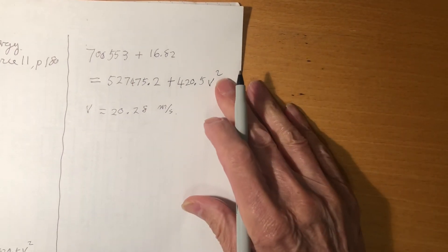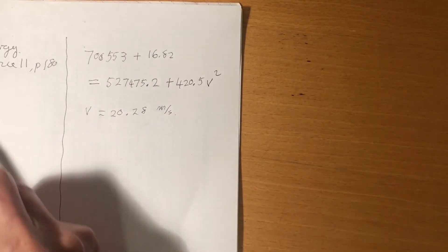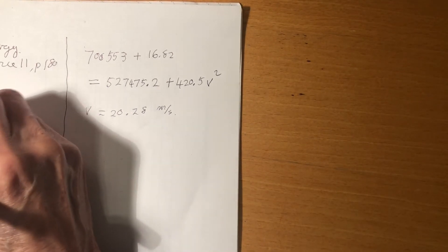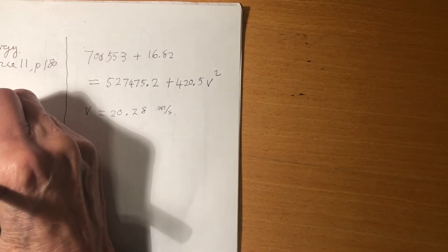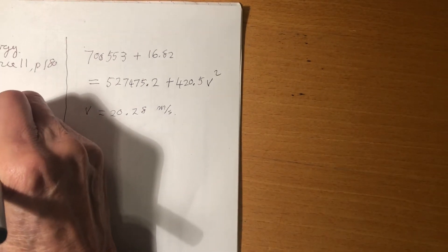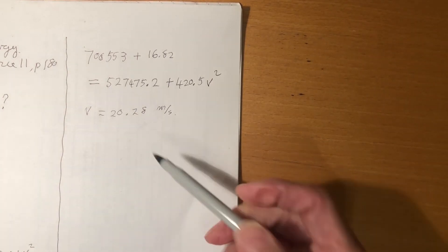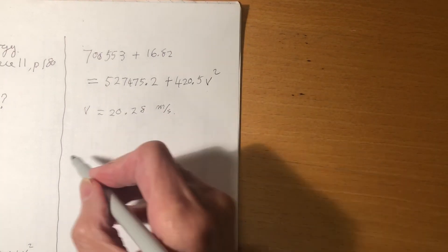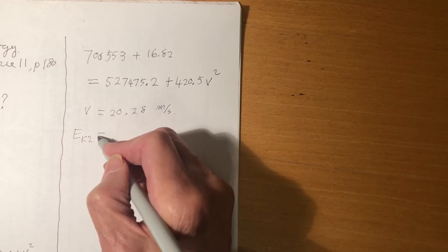I forgot to mention that the question from page 180 is not asking to find V. The question is asking what is the kinetic energy at position 2. So instead of finding velocity, we find V first, and once we have V, we have the kinetic energy at position 2.